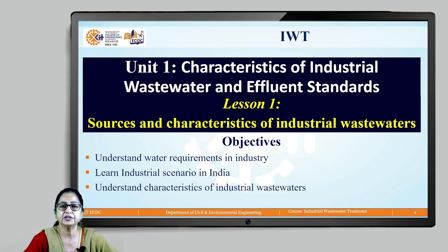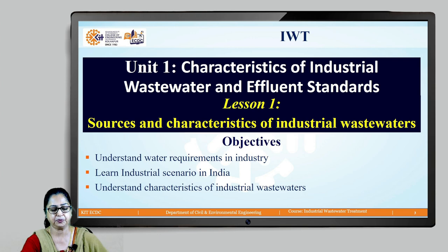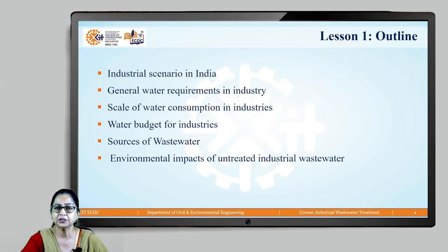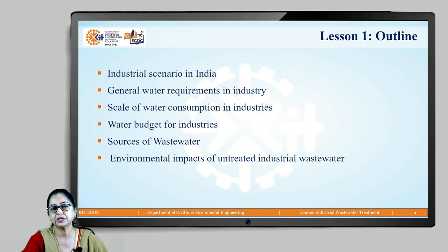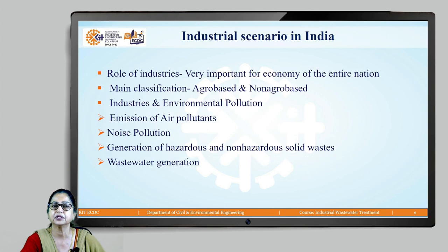We will start with Unit 1: Characteristics of Industrial Wastewater and Effluent Standards. The objectives of Lesson 1 are to understand water requirements in industry, to learn the industrial scenario in India, and to understand characteristics of industrial wastewater. The lesson outline includes industrial scenario in India, general water requirements, scale of water consumption, water budget, and sources of wastewater along with environmental impacts.